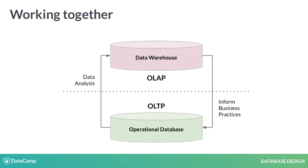OLAP and OLTP systems work together — in fact, they need each other. OLTP data is usually stored in an operational database that is pulled and cleaned to create an OLAP data warehouse. We'll get more into data warehouses and other storage solutions in the next video. Without transactional data, no analyses can be done in the first place. Analyses from OLAP systems are used to inform business practices and day-to-day activity, thereby influencing the OLTP databases.